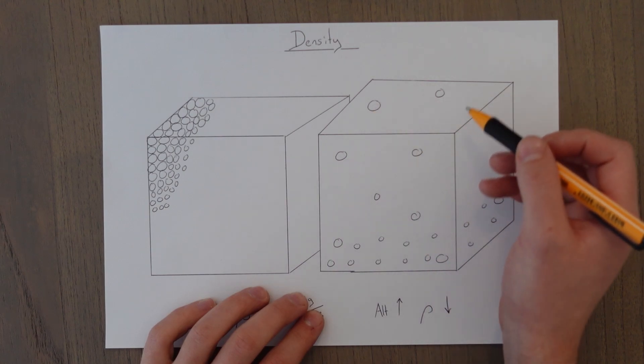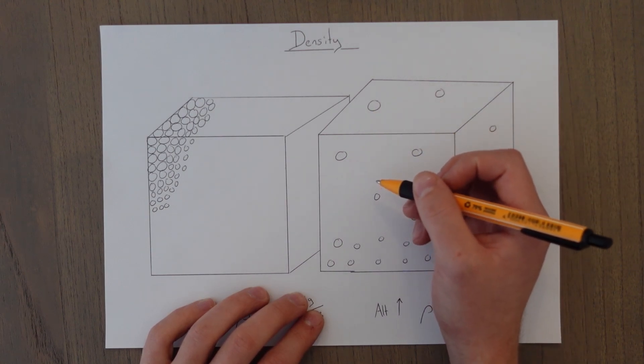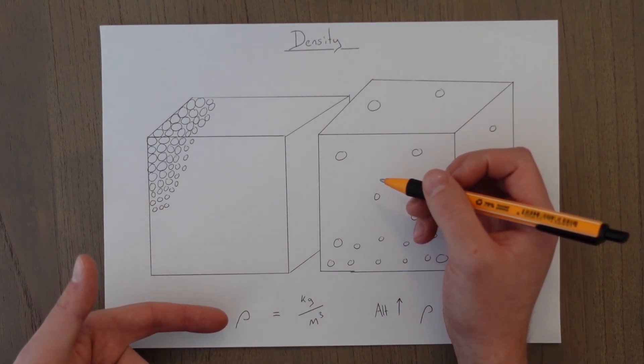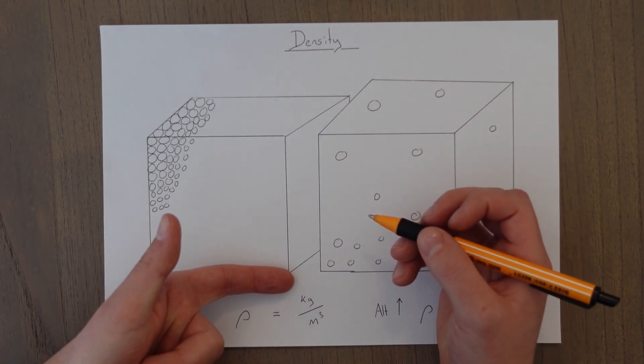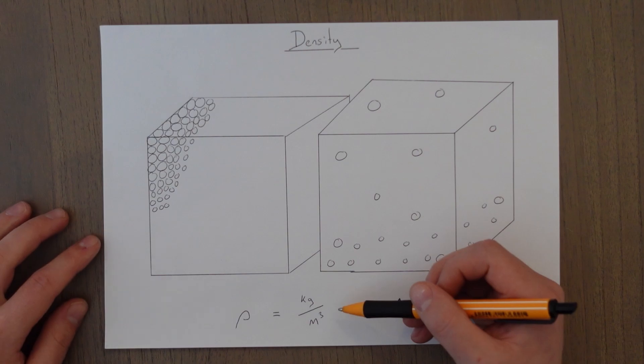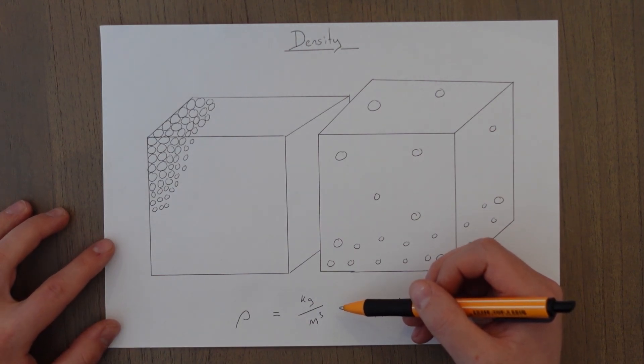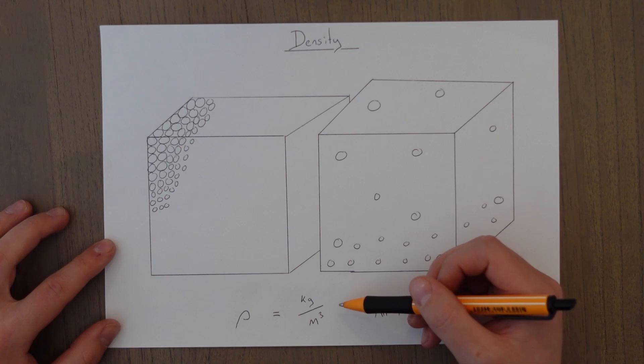Density is the mass of all the molecules per unit volume. It is given the symbol rho, which is a Greek letter, and it is described as mass divided by some volume. Kilograms per meter cubed is a very common measure of this.